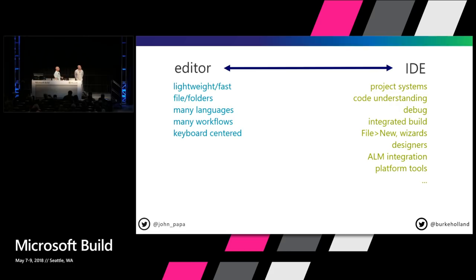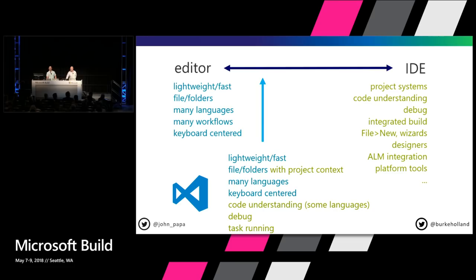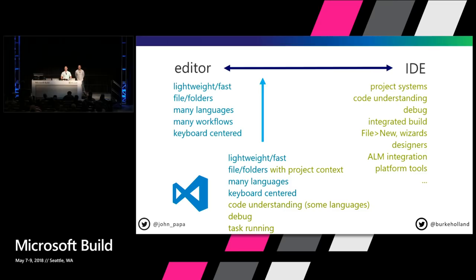IDEs like Visual Studio or IntelliJ do a lot of great things — they understand so much more. They're usually larger, a little bit slower because they do more things, but everything is accessible through a click of a button. On this spectrum, the VS Code team fell mostly over to the editor's side with a little extra magic. VS Code is an editor with a little extra power.